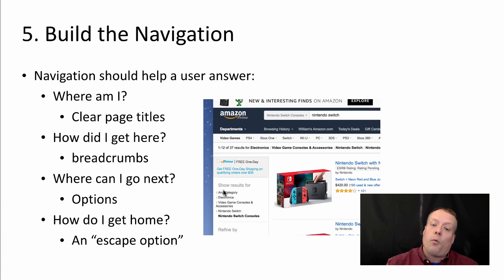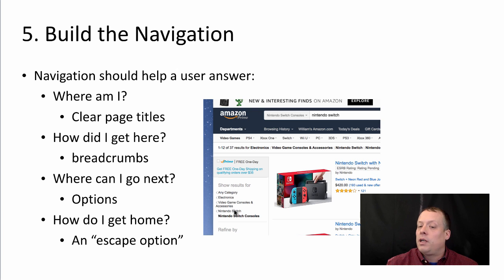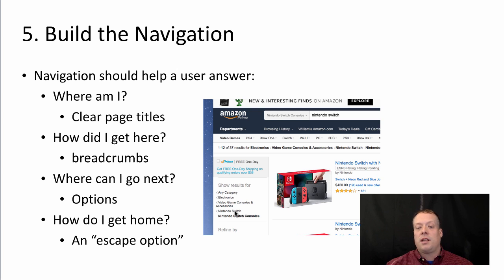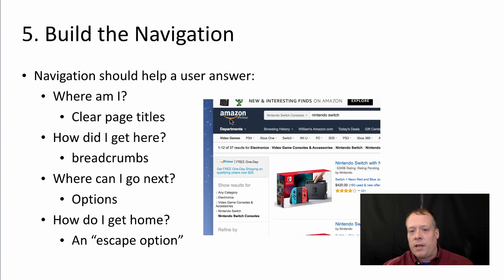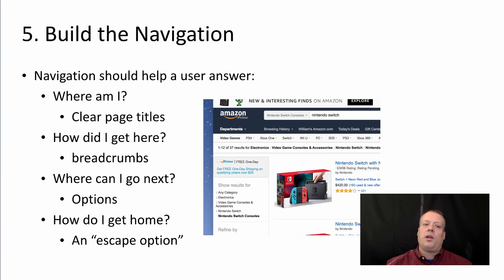In some cases you might not have gone through each of those categories individually — you may have searched for Nintendo Switch and clicked directly. But it tells you where within the information architecture this particular page lives. The other thing you should always have is an escape option, and usually this is the big logo in the upper left corner. You click it and you go back to the very beginning of the overall page. That's an example of how to build good navigation into your user experience.